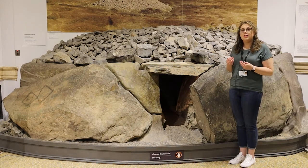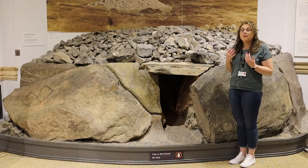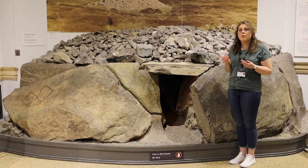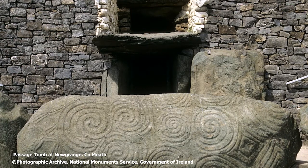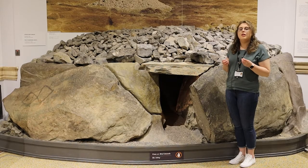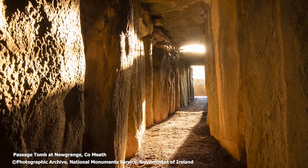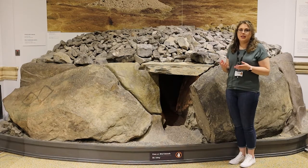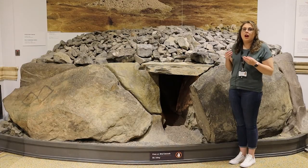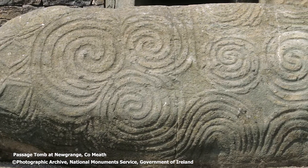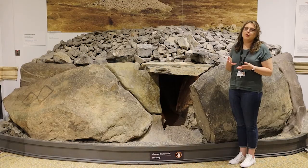One of the most famous passage tombs in Ireland is Newgrange, located in County Meath. It was built around 3,200 BC, over 5,000 years ago, and it is older than the pyramids in Egypt. At the entrance to Newgrange, over the doorway, there is a small box known as the light box. On the shortest day of the year, called the winter solstice, the rising sun shines through the light box and lights up the chamber. There is a lot of megalithic art at Newgrange — inside the tomb there is a triple spiral known as the triskel, and all around the outside the large curbstones are decorated with megalithic art.